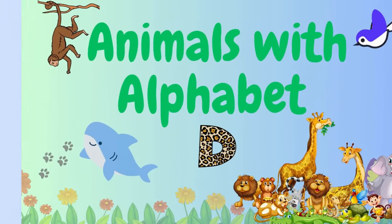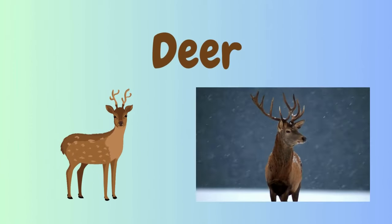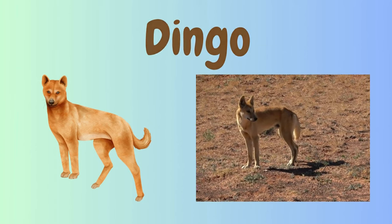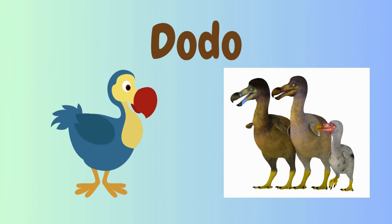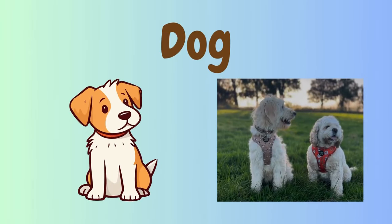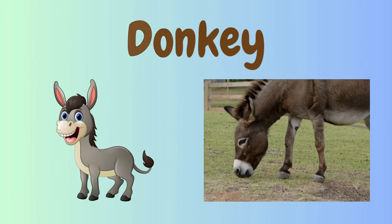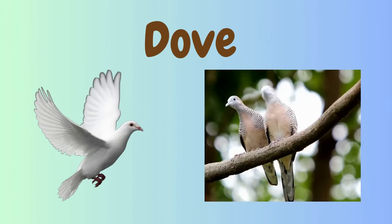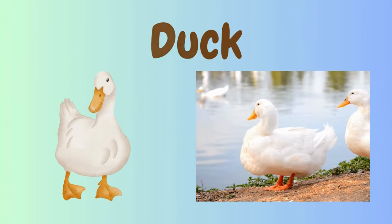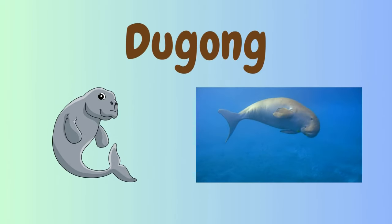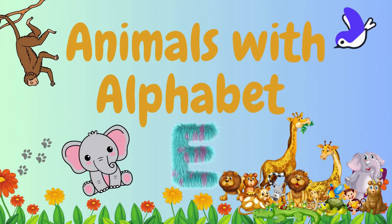Animals with Alphabet D. Deer. Dingo. Dodo. Duck. Dolphin. Donkey. Duck. Dragonfly. Duck. Dugong.